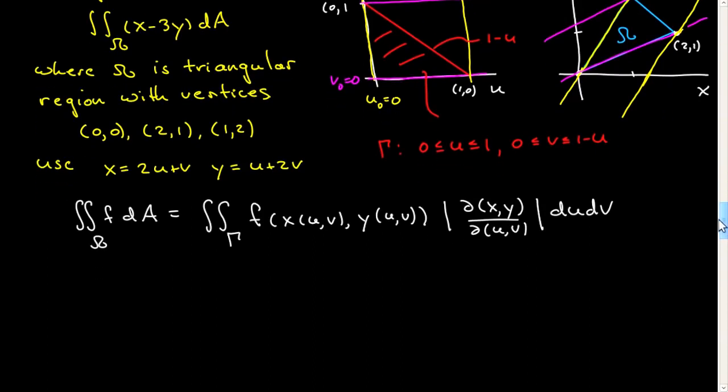So we can just go about plugging in. This will become the integral from u equals 0 to 1, v from 0 to 1 minus u, my limits of integration. Now f of, I have to convert this to uv, so I have here x, x is 2u plus v minus 3y, y is u plus 2v. I've now converted my integrand to a function of u and v only. This determinant I worked out before. In any case, you can easily do this quickly from this transformation. You're going to have 2 times 2 minus 1 times 1. You work that out, and you'll get that. That's a 3.